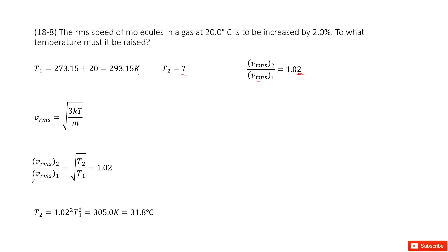Therefore we can find the ratio for the speed v2 over v1 is square root of T2 over T1, right? Because this one's constant, constant. So square root of T2 over T1 just equals 1.02.